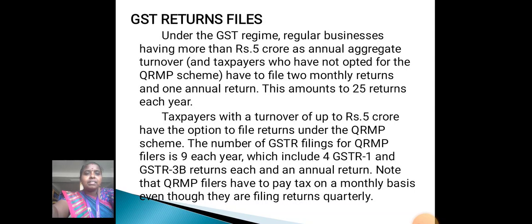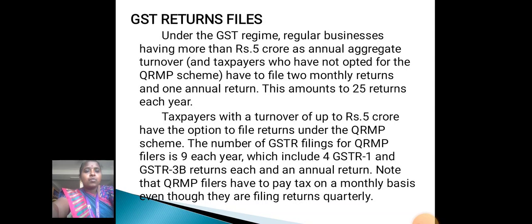This amounts to 25 returns each year. Taxpayers with a turnover of up to 5 crore have the option to file returns under the QRMP scheme. The number of GSTR filings for QRMP filers is 9 each year, which include 4 GSTR1 and GSTR3B returns each and an annual return. Note that QRMP filers have to pay tax on a monthly basis even though they are filing returns quarterly.